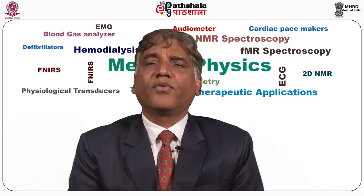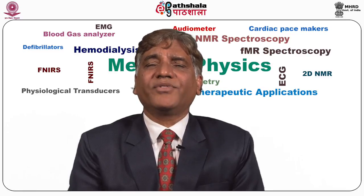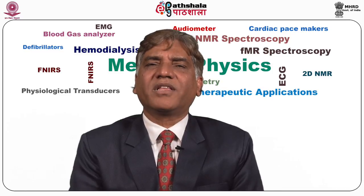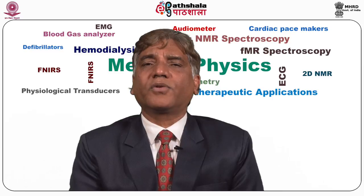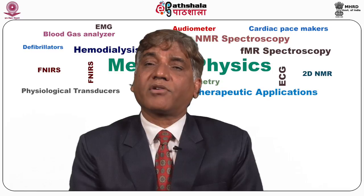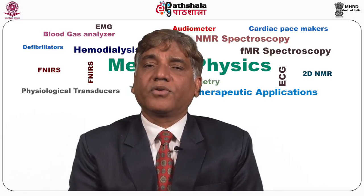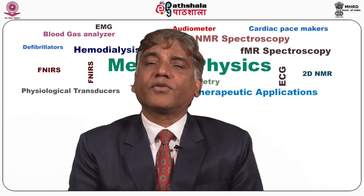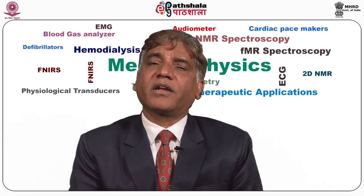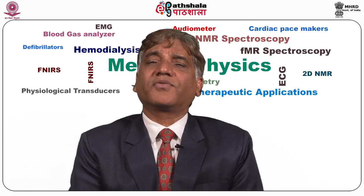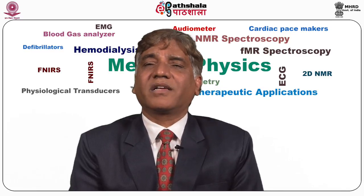For fluid suppression, FLAIR — fluid attenuated inversion recovery pulse sequence — is used. In FLAIR, the time of inversion is much longer. For CSF, this time is about 1500 milliseconds. At this point, the CSF is passing through zero on its recovery from minus Mz to plus Mz, whereas fat has already achieved most of its longitudinal magnetization. When the 90-degree RF pulse is applied, the signal from CSF is zero because its longitudinal magnetization is zero at that moment, so there is nothing to excite. Therefore, the signal from CSF would be zero on the image, effectively suppressing CSF.